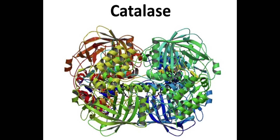Each enzyme is responsible for one particular reaction in the cell. In this lab you will study an enzyme found in the cells of many living tissues — the enzyme is called catalase. It speeds up a reaction that breaks down hydrogen peroxide (H₂O₂), which is a toxic chemical, into two harmless substances: oxygen and water. Light can also break down hydrogen peroxide, which is why the chemical is sold in dark containers.